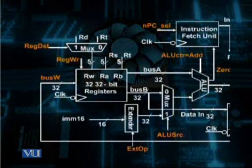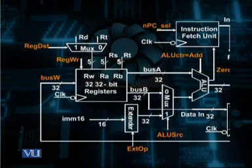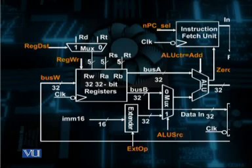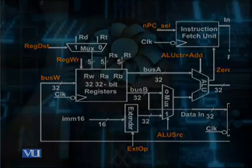Another control signal visible in this slide controls when the sign extender is to be used — that is the extend operation control, written as extop. It is given at the input of the extender control, which extends the immediate data input by extending the sign bit of the data to find out the memory address, or if it is an immediate data instruction, to convert the 16-bit immediate value into a 32-bit data value to be used with the arithmetic and logic unit.